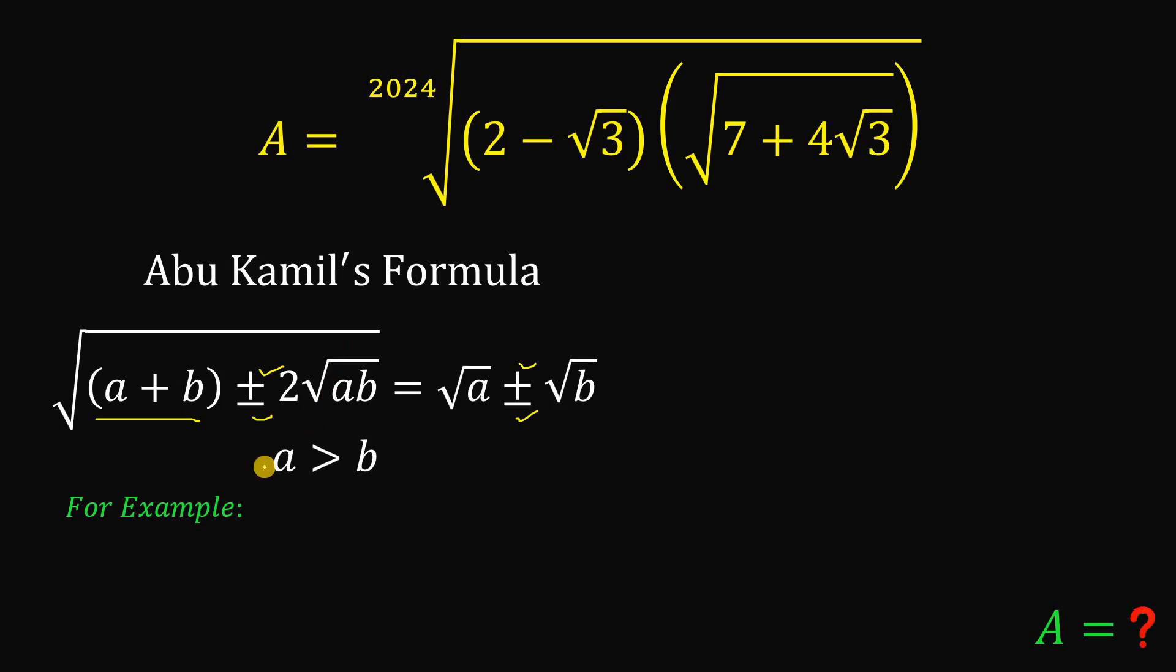Alright, so for example, we have here square root of 8 minus 2 times square root of 15. Now take note, this 8, we can rewrite this as 5 plus 3 while 15 is 5 times 3. Now this is now in the form of the Abu Kamil's way. So this simplifies to square root of 5 minus square root of 3 because 5 is greater than 3 and that is the answer.